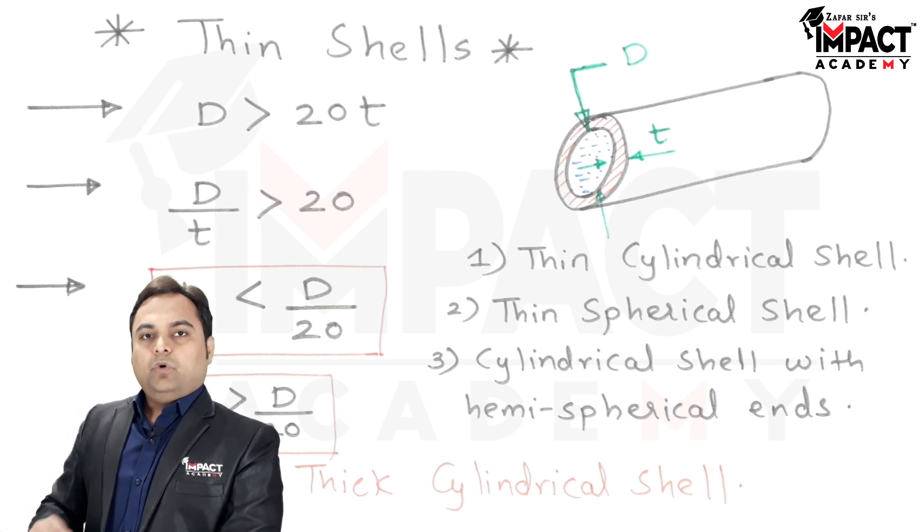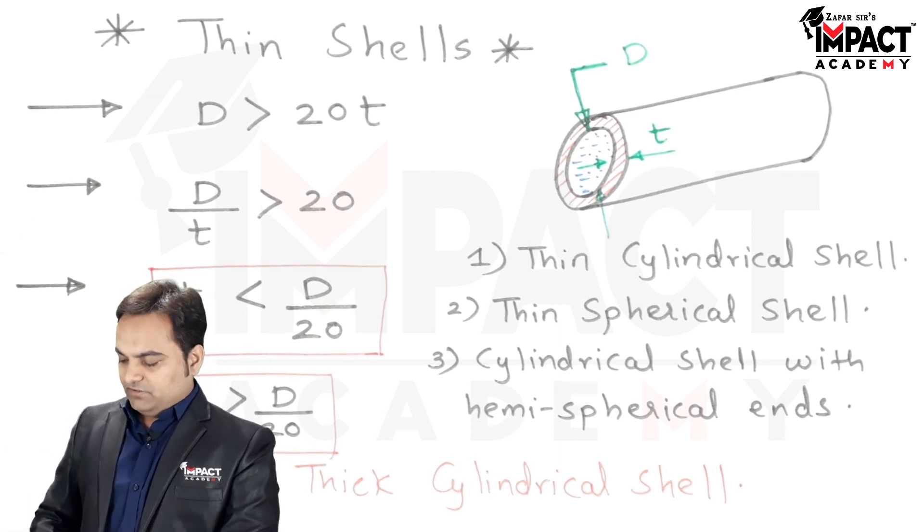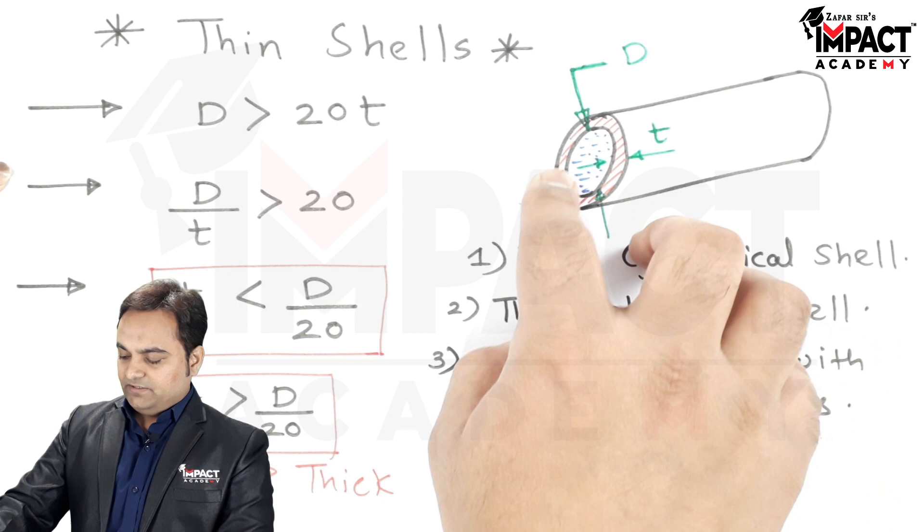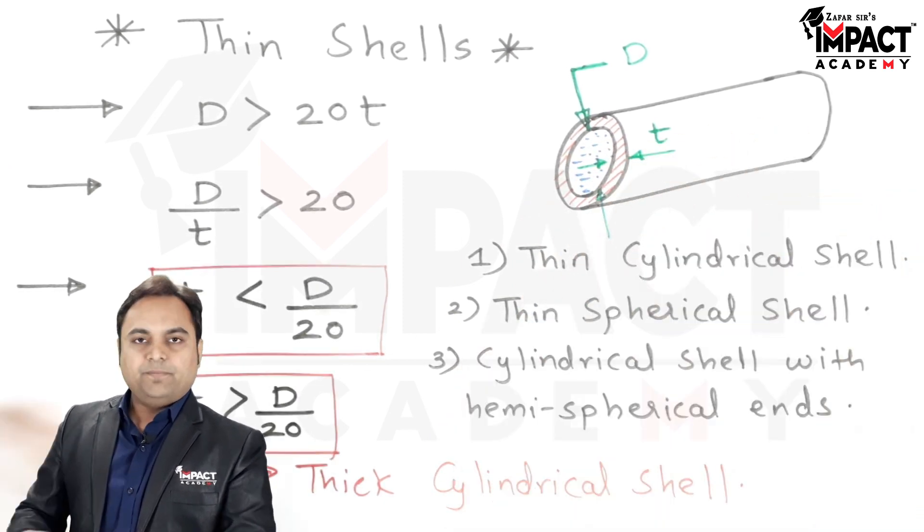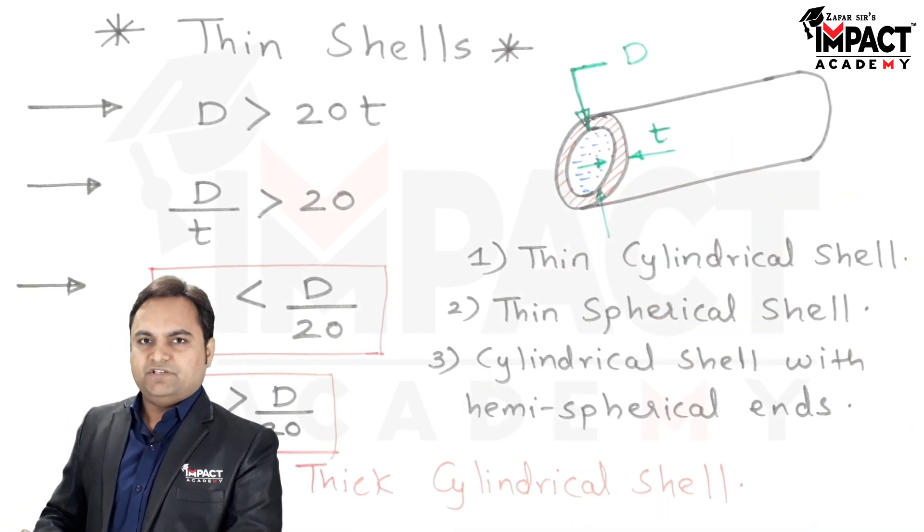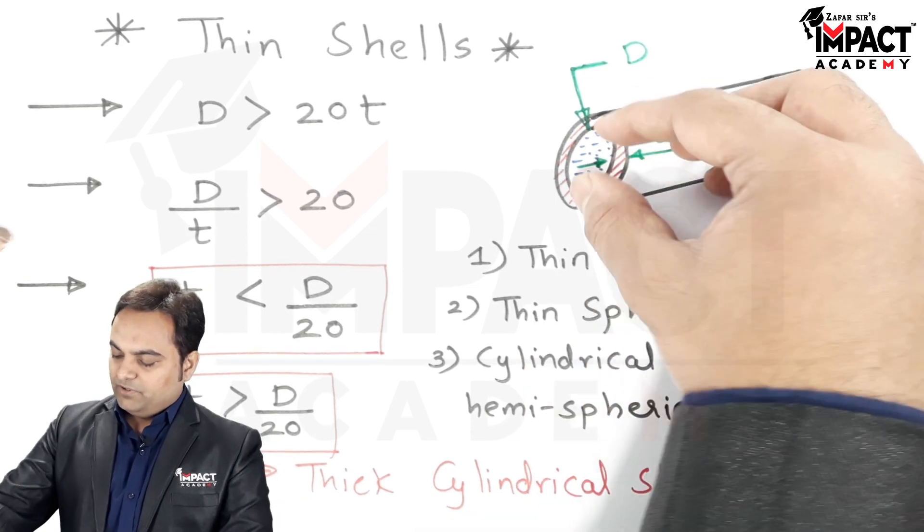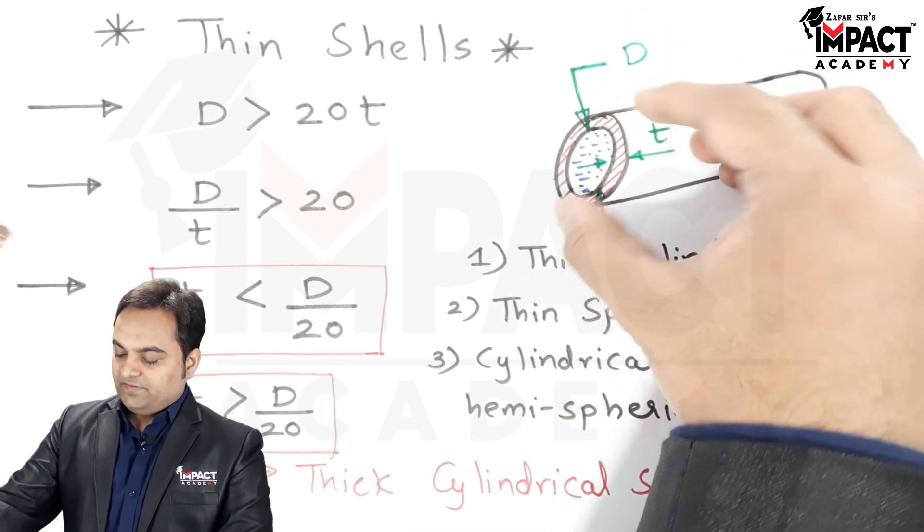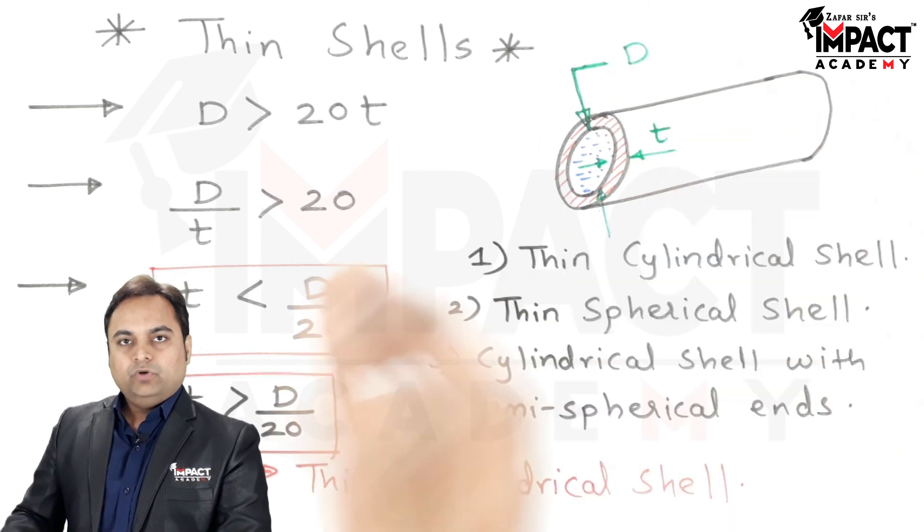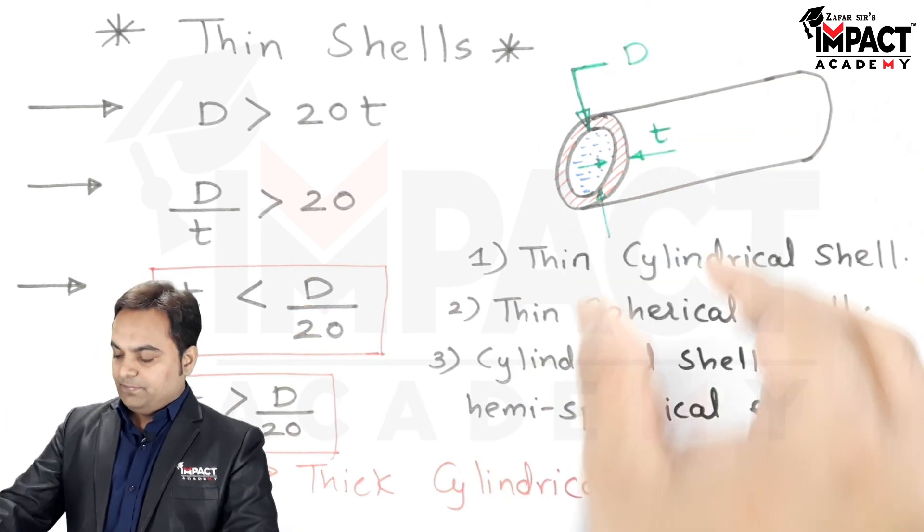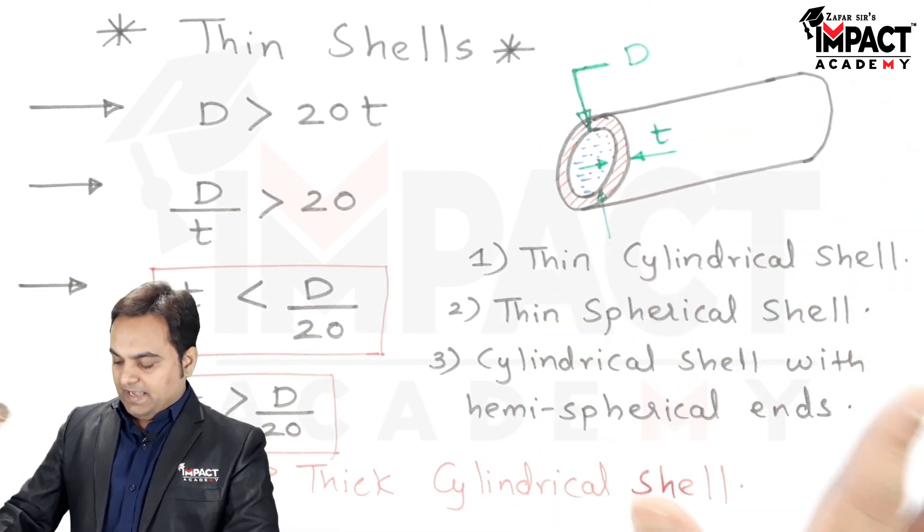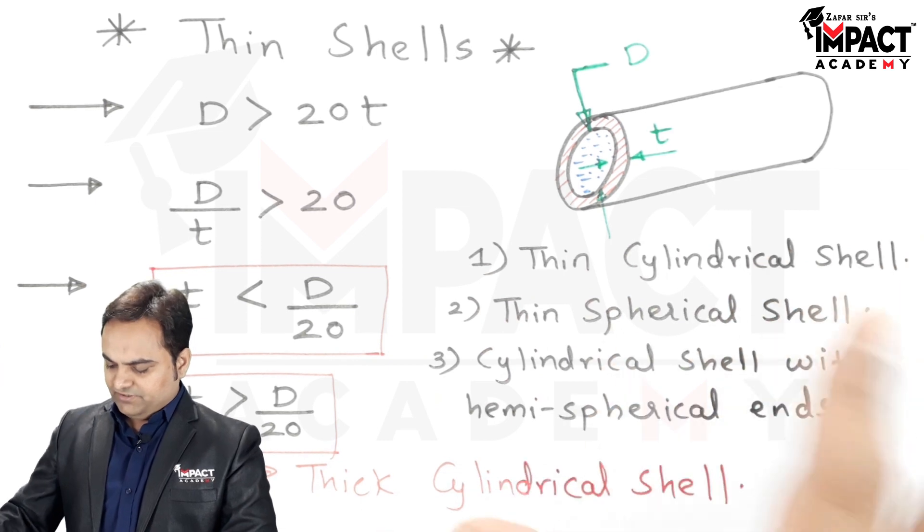What happens in case of these thin cylindrical shells is that because of the internal pressure, this cylinder may burst and there are two chances of bursting. Either it may burst circumferentially, that is it can be divided into two halves, or it can break longitudinally.